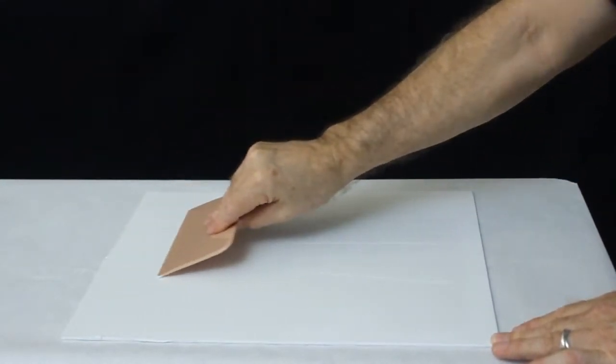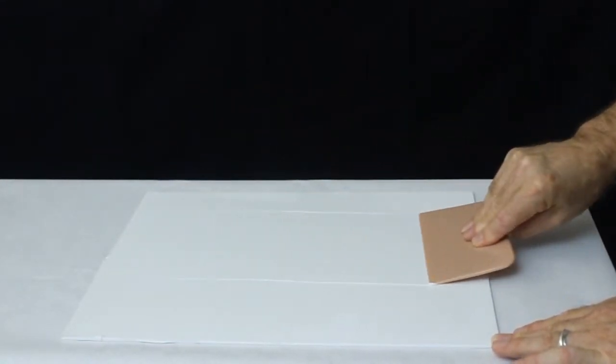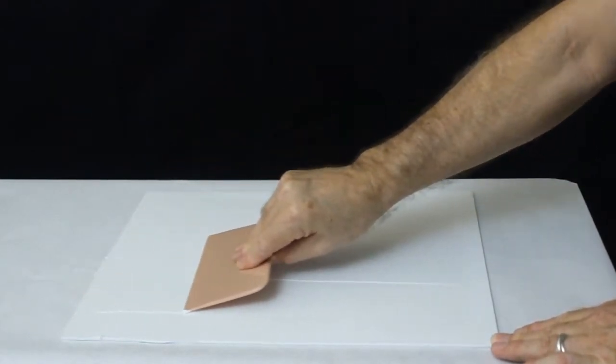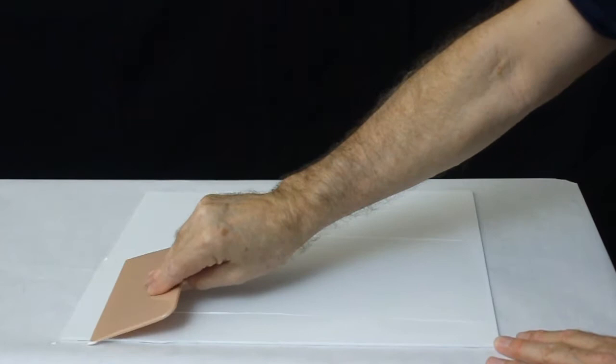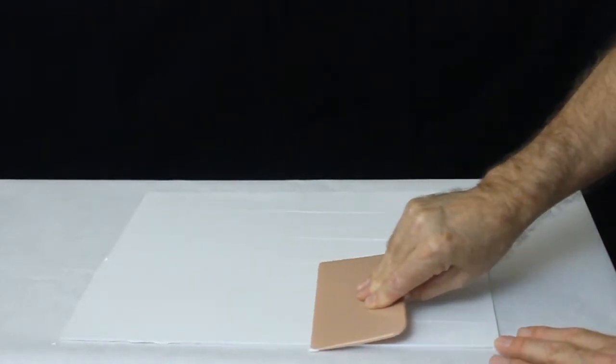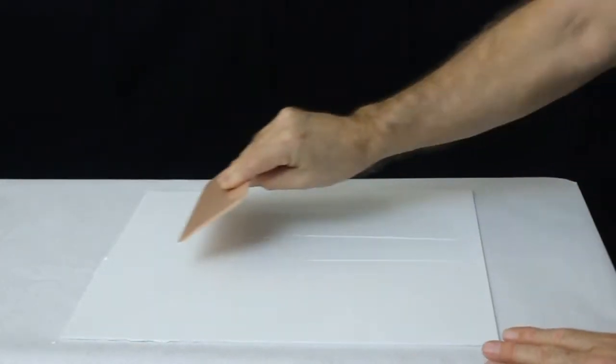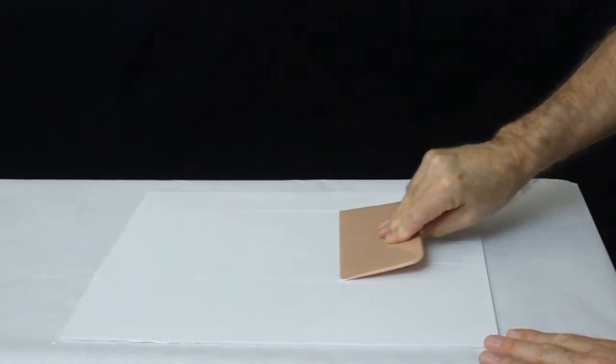As I work this modeling paste, small ridges build up at the corners of the Bondo tool. These ridges will go away as I spread the modeling paste. If they're excessive or won't go away, you have probably added too much modeling paste. Start taking the excess off with your finger.